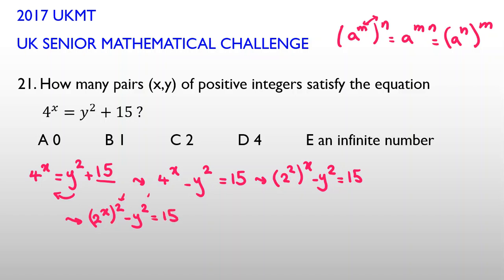Now, because we have 2 in the powers, I can say a^2 - b^2 = (a-b)(a+b). So here, I can say (2^x - y)(2^x + y) = 15.